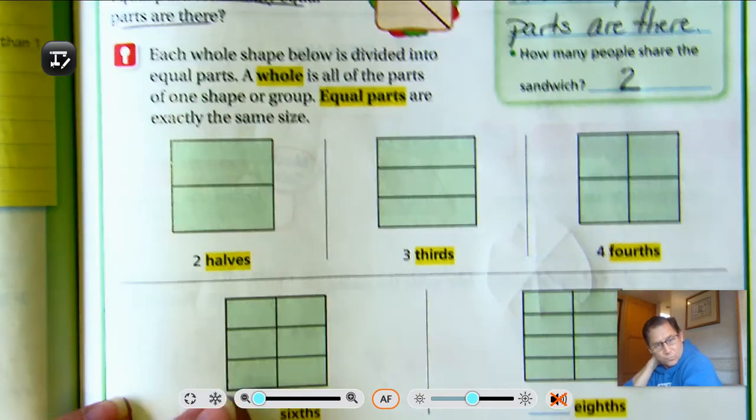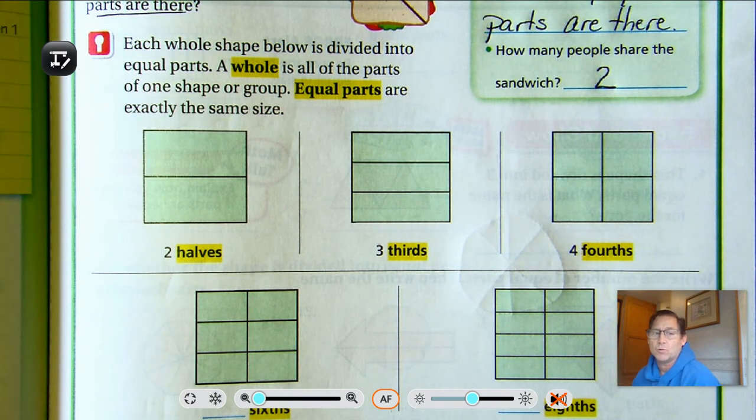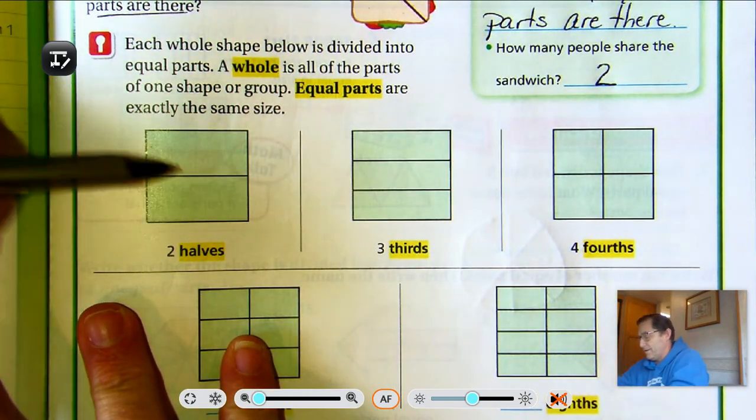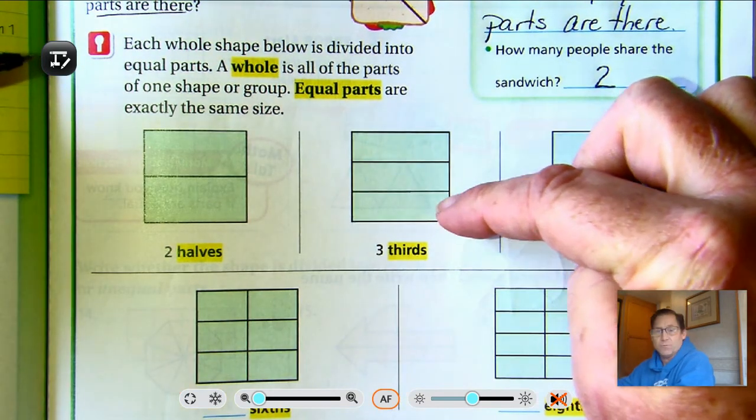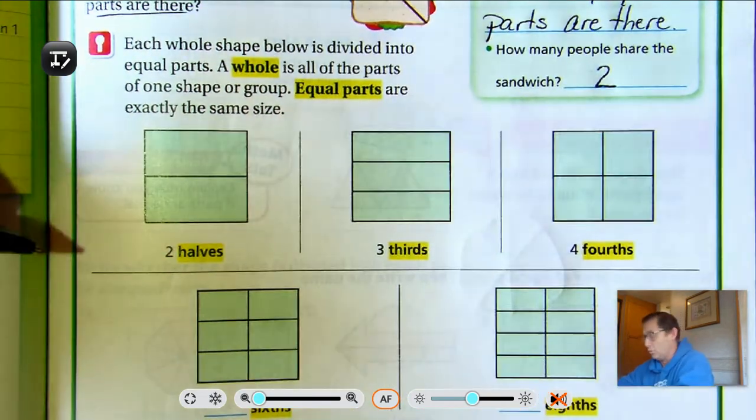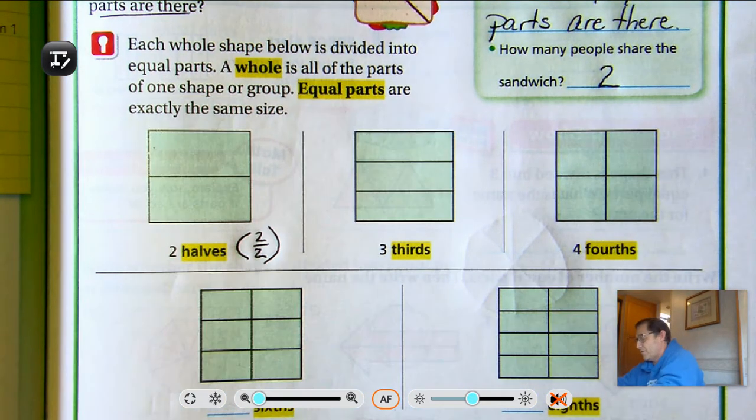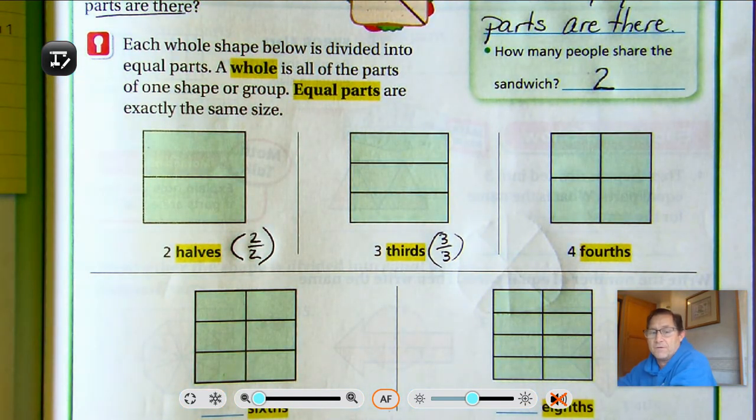Alright, so we have to understand what they mean by parts of a whole. So each whole shape below is divided into equal parts. A whole is all of the parts of one shape or group. Equal parts are exactly the same size. So here, I have one square and they divided it into two halves. There's two halves. Here I see three equal parts. We call that thirds. There's three thirds in this whole. There's two halves in this whole. You'll see this written as a fraction like that, with the two over the two. Three thirds, you would see it written as three over three. And we read it as three thirds.